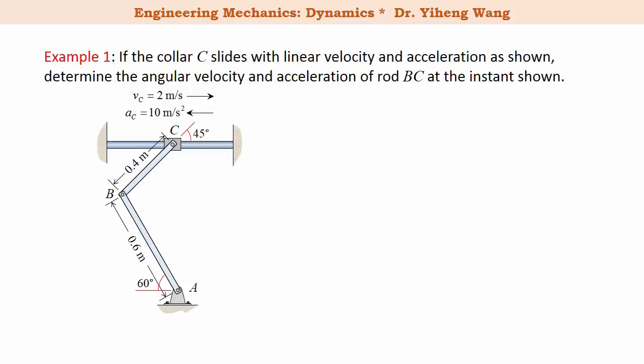Let's look at this example. Rod AB, rod BC, and collar C are connected together. Collar C slides along the horizontal direction, and its velocity and acceleration are given. We need to solve for the angular velocity and angular acceleration of rod BC. Collar C is doing translation; rod AB is rotating about a fixed axis through point A with angular velocity omega_AB and angular acceleration alpha_AB; rod BC is doing general plane motion with angular velocity omega_BC and angular acceleration alpha_BC.